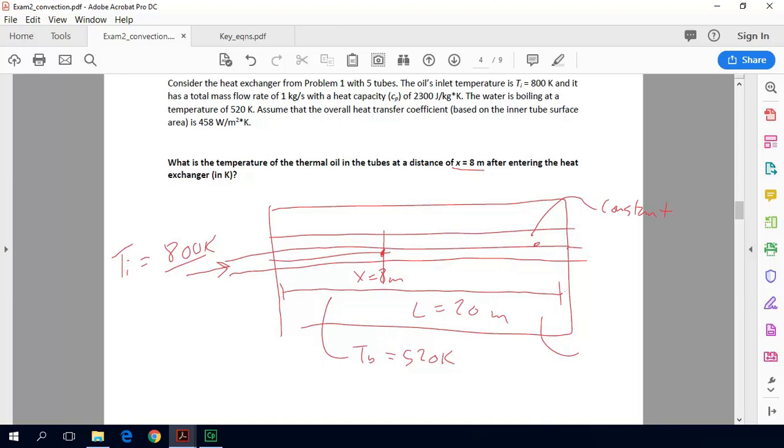So because this water is at a constant temperature, we can recognize that this fluid, this oil traveling through, is exposed to a constant temperature as it travels through. So while the oil's temperature itself will change, the temperature of the other fluid, the water with which it's exchanging heat, will not change.